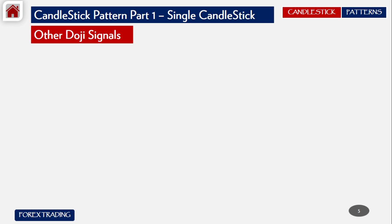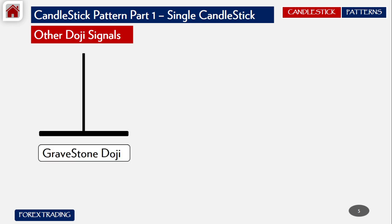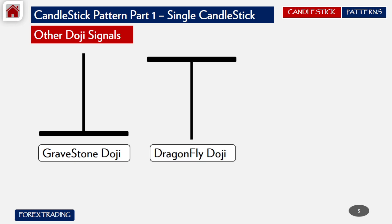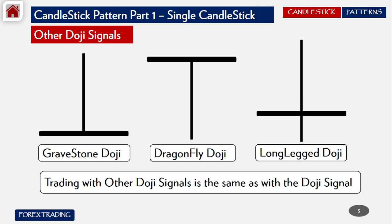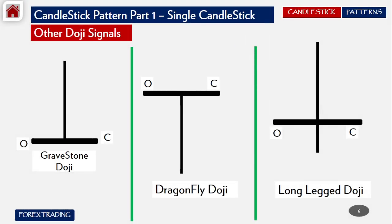We also have other doji signals. There is the Gravestone Doji, the Dragonfly Doji which is the reverse of the Gravestone, and the Long-Leg Doji. Trading with these other doji signals is the same as with the original doji. Let's look at all three in more detail.